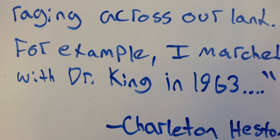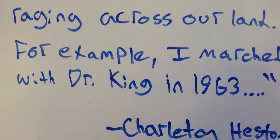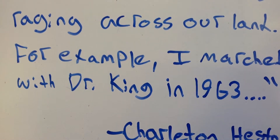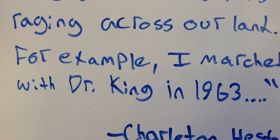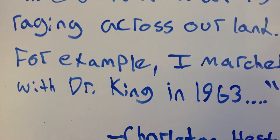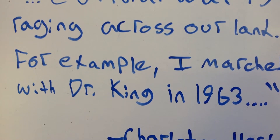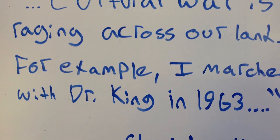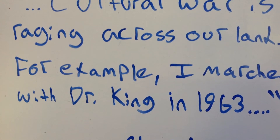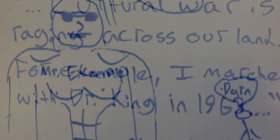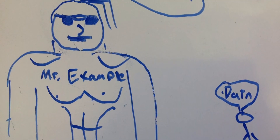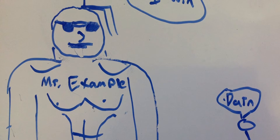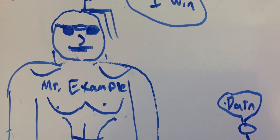An example is: "Cultural war is raging across our land. For example, I marched with Dr. King in 1963," said by Charlton Heston. Here, an example was used to make the argument seem more credible.